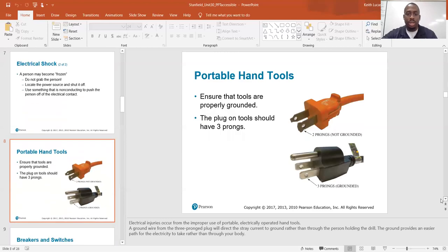Portable hand tools. Ensure that tools are properly grounded. The plug on tools should have three prongs. A lot of people ignore that third prong. This one right here, this is your ground. And when that breaks off, this appliance becomes dangerous because you no longer have that ground. Electrical injuries occur from the improper use of portable, electrically operated hand tools. A ground wire from the three-pronged plug will direct the stray current to the ground rather than through the person holding the drill. The ground provides an easier path for the electricity to take rather than through your body.